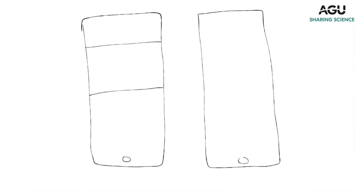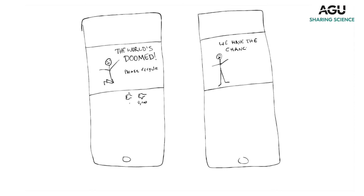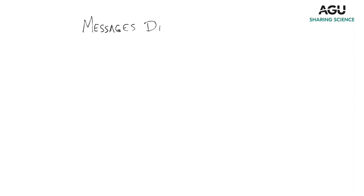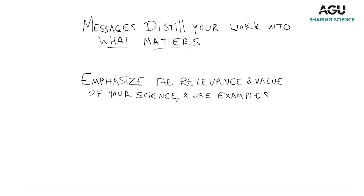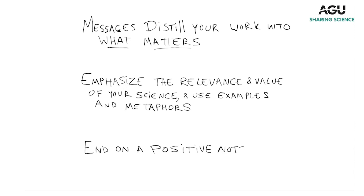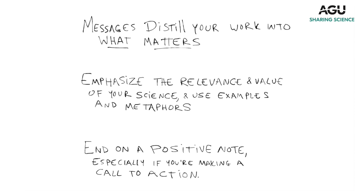One thing to really keep in mind: try, no matter how difficult, to end on a positive note. We as humans are programmed to respond to positivity. Even if the message isn't positive, there is a way to end on one — talk about being part of the solution, talk about making a positive change. This is especially important if you have a call to action in your message. To wrap up: messages distill your work into what matters. Emphasize the relevance and value of your science, and if possible, use examples and metaphors — this relates to people in a way that just throwing facts at them may not. And end on a positive note.